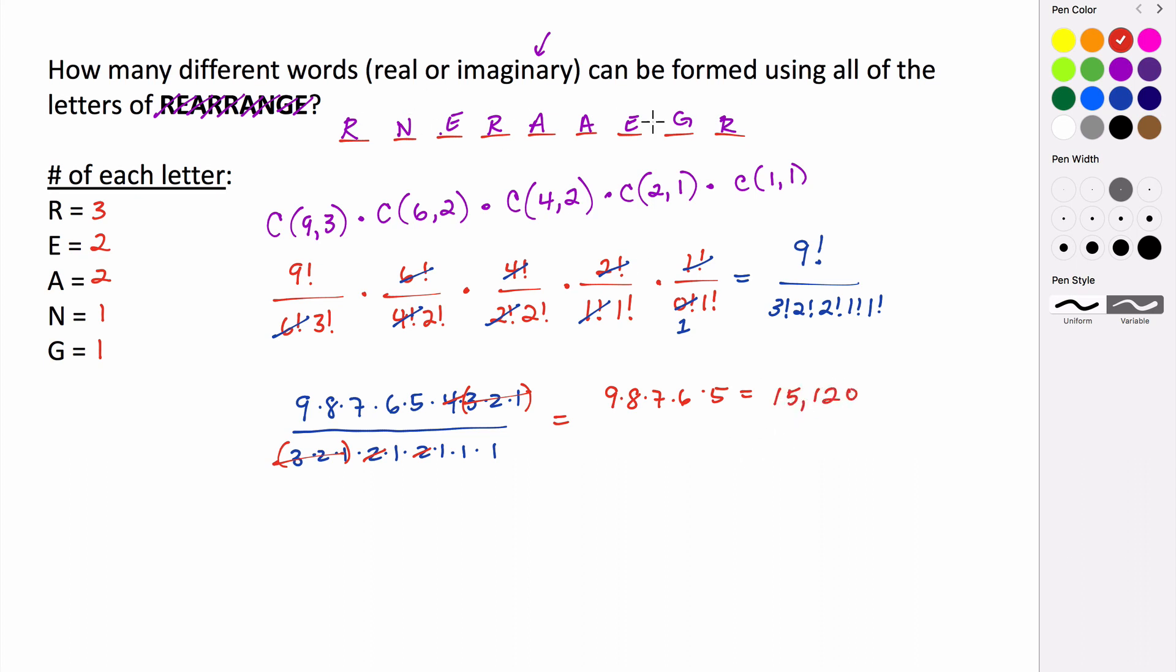So this is one of the 15,120 arrangements of the letters in the word rearrange. So again, we use combinations for these because the letters are not distinguishable, they're not distinct. So the order in which we place them doesn't matter because they're exactly the same.